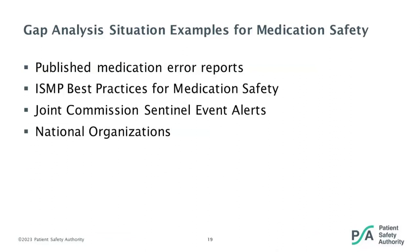Here are some examples of information sources for initiating a gap analysis to improve medication safety. A published medication error report may identify opportunities. ISMP best practices provide specific, actionable recommendations. Joint Commission Sentinel Event Alerts could pertain to medication safety. National organizations such as APHA, ASHP, and AHRQ could also be used. This tool is typically used proactively in response to external concerns. An example is reviewing ISMP best practice recommendations for safe storage of neuromuscular blockers — something our organization did when we had a change in automated dispensing cabinet equipment.